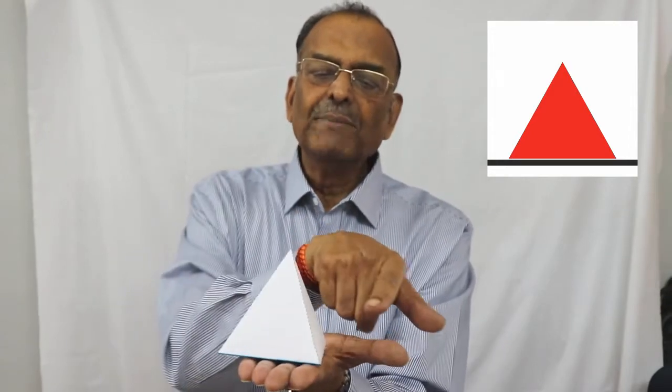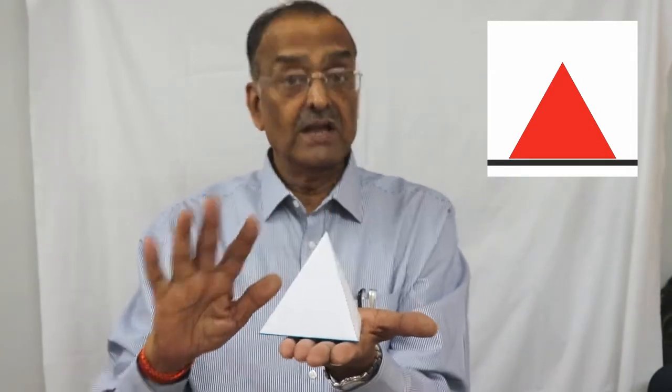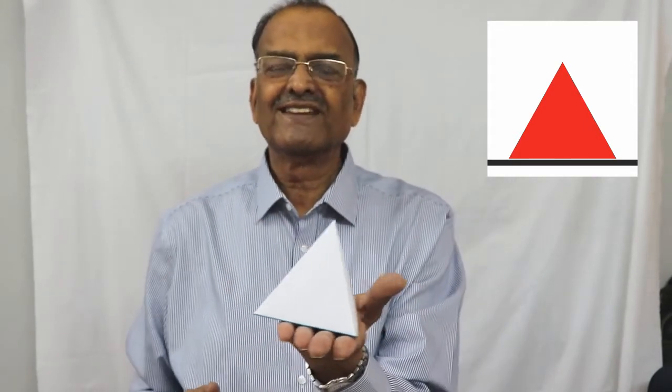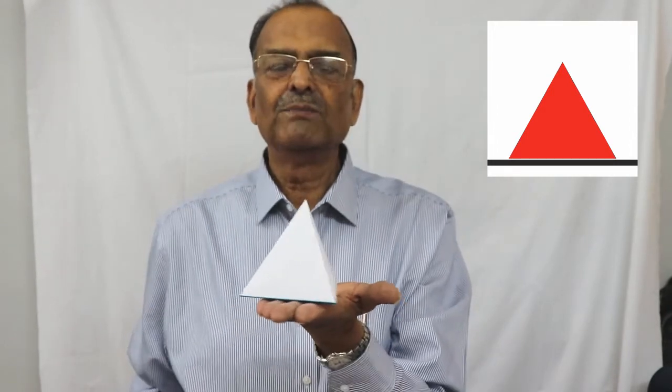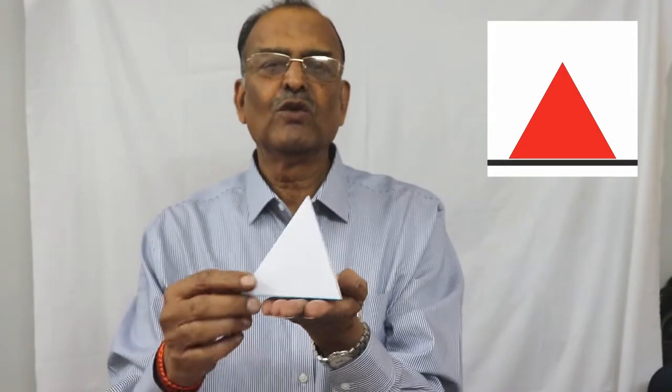A tetrahedron is a solid made up of four equilateral triangles, and all the triangles are equal — it is a triangular pyramid. I have one in hand: each and every side is 40 mm. The base edges AB, BC, CA are all 40 mm each, and the lateral edges OA, OB, OC are again 40 mm each. There are three equilateral triangles on the sides and one equilateral triangle at the bottom. That is a tetrahedron.